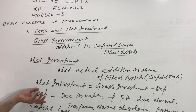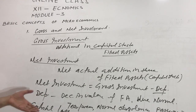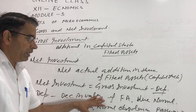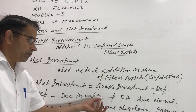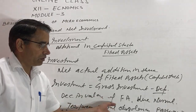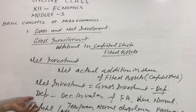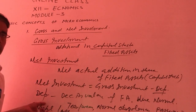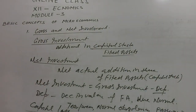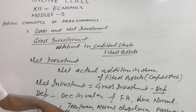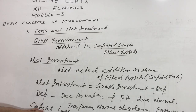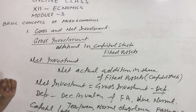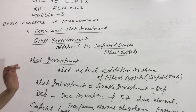Some students don't know the difference between depreciation and capital loss, but there is a difference. Depreciation is the decrease in the value of fixed assets due to their regular use, normal wear and tear, or normal obsolescence of technology over time. Capital loss, on the other hand, is a sudden loss in the value of a fixed asset — for example, when a fixed asset is damaged in an accident and its value decreases by a certain amount.